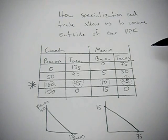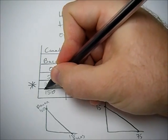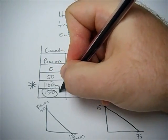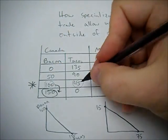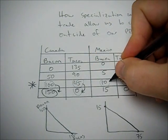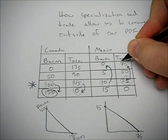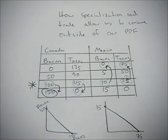So what if we switch that and allow them to specialize? So Canada will move here and produce 150 bacon and zero tacos. Mexico is going to move up here and produce 75 tacos and zero bacon.